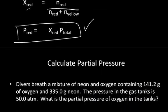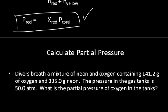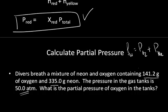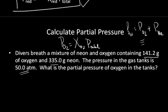Let's calculate the partial pressure of this gas. Divers breathe a mixture of neon and oxygen containing 141.2 grams of oxygen and 335.0 grams of neon. The pressure in the gas tanks is 50 atmospheres. What is the partial pressure of oxygen in the tanks? We know the total pressure equals the partial pressure of oxygen plus the partial pressure of neon, and the total pressure is 50 atmospheres. To find the partial pressure of oxygen, we can use the equation: partial pressure of oxygen equals the mole fraction of oxygen times the total pressure.